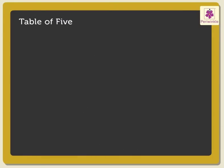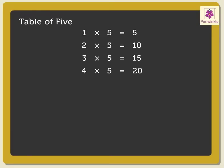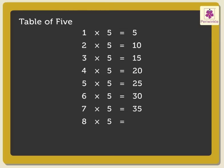Next is the table of 5. 1 five is 5. 2 fives are 10. 3 fives are 15. 4 fives are 20. 5 fives are 25. 6 fives are 30. 7 fives are 35. 8 fives are 40. 9 fives are 45. 10 fives are 50.